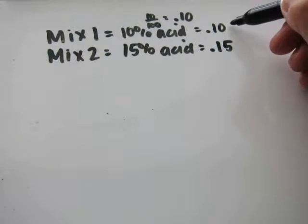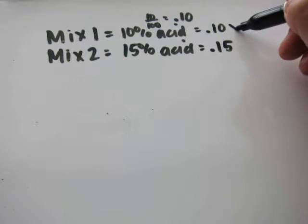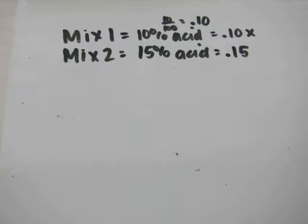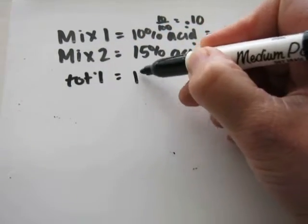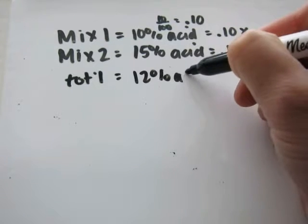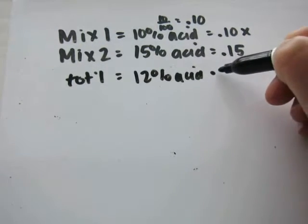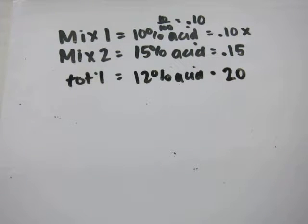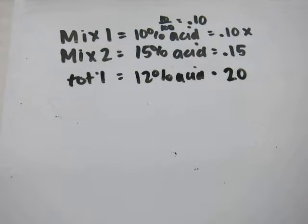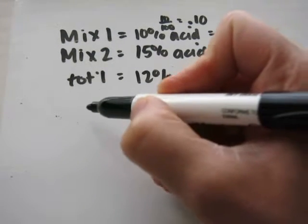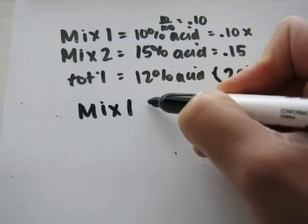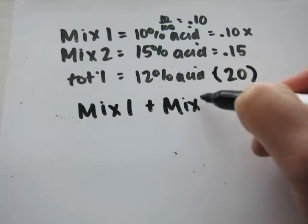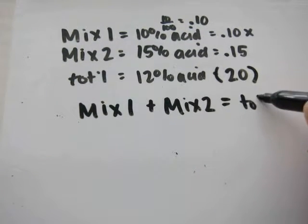We want to solve the volume for the 10% solution. So we'll call that x. The problem also tells us the final solution is going to be, I'm just going to call it the total solution, a 12% acid of 20 ounces. So times 20 because whenever you have a story problem and you see the word of, a 12% acid plus the mixture 2 equals the total.